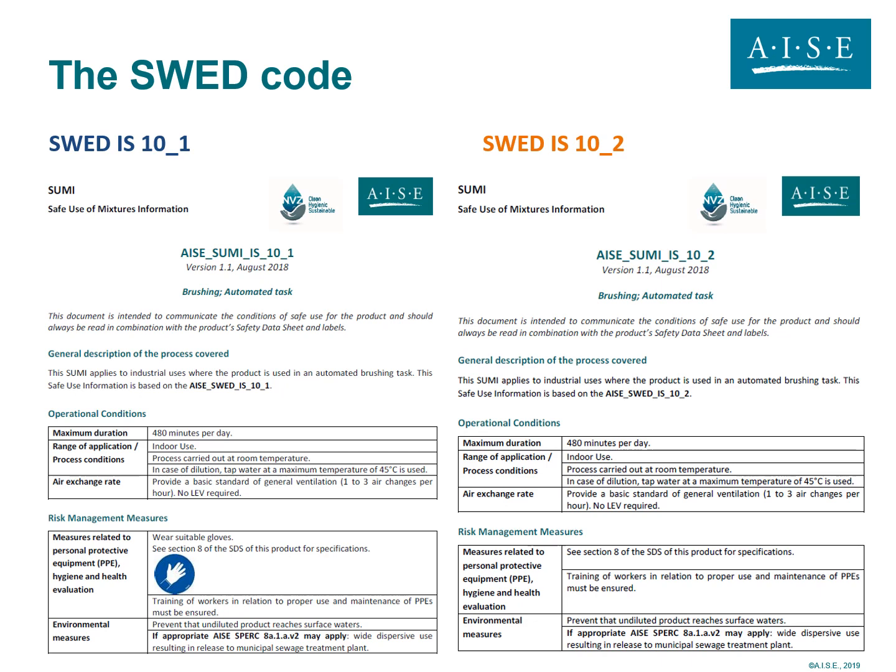SWED codes have different levels. In this case, SWED IS 10 is related to brushing automated tasks for institutional and industrial applications. It has two levels: one wearing gloves and one not wearing gloves.